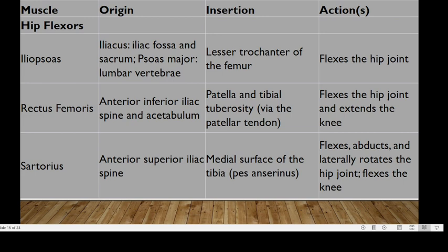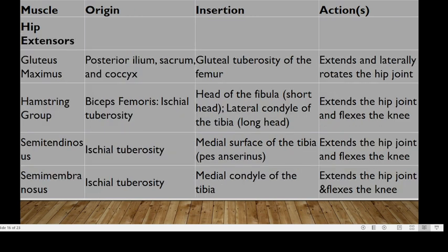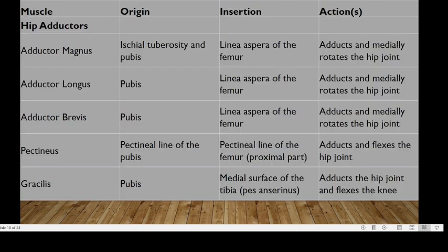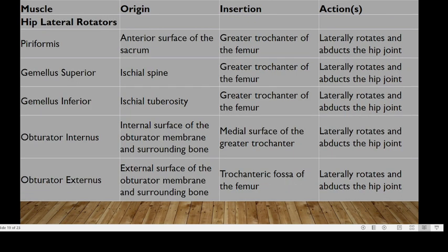For muscles acting on the hip joint: hip flexors include the iliopsoas, rectus femoris, and sartorius. Extensors include the gluteus maximus, hamstring muscles, semitendinosus, and semimembranosus. Hip abductors include the gluteus medius, gluteus minimus, and tensor fasciae latae. Hip adductors include adductor magnus, adductor longus, adductor brevis, pectineus, and gracilis. The lateral rotators include the piriformis, gemellus superior, gemellus inferior, obturator internus, and obturator externus.